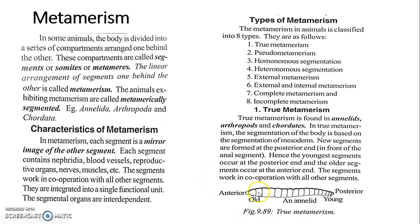These parts are similar to each other. Reproductive organs are also similar in each part. The linear arrangement of segments, one behind the other, is called metamerism.